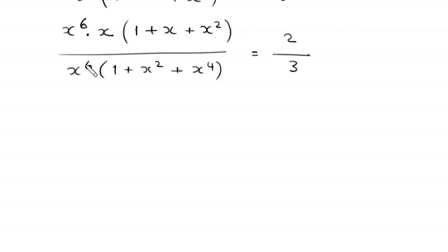Now x to the power 6 in the numerator will be cancelled out with x to the power 6 in the denominator.